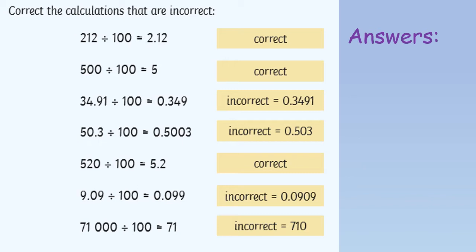500 divided by 100 is 5. 34.91 divided by 100 is incorrect. The answer should be 0.3491. 50.3 divided by 100 is incorrect. The answer should be 0.503. 520 divided by 100 is 5.2. 9.09 divided by 100 is incorrect. The answer should be 0.0909.